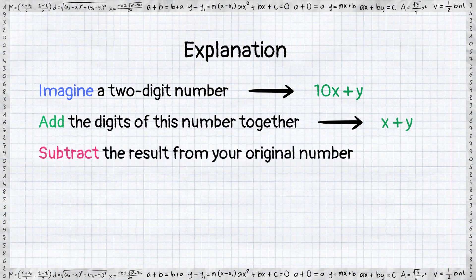When you subtract the sum of the digits from the original number, then the y will cancel out, leaving you with 10x minus x, which simplifies to 9x.